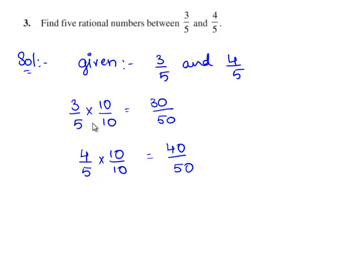So here we have obtained the equivalent rational numbers for 3/5 and 4/5.